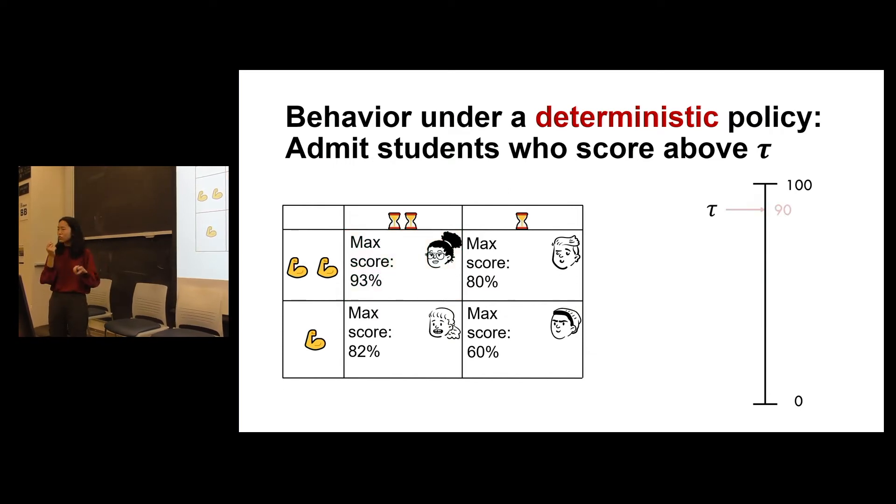So let's just think about maybe we should change our policy. Let's just say that we admit students who now score above 80. Are we happy now? Well, we do admit the students with the high skill. But notice here that we're also admitting the student who has the low skill but the high budget.